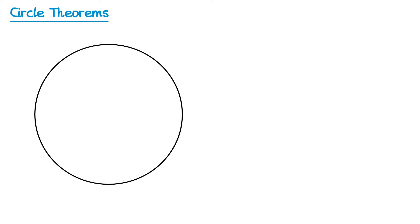For the next theorem we're going to need to mark on the centre of the circle. We're going to draw a chord that goes straight through the centre — this is known as a diameter. If we now do the same thing as we did for the first theorem and draw angles that are in the same segment, we know they're going to be equal.